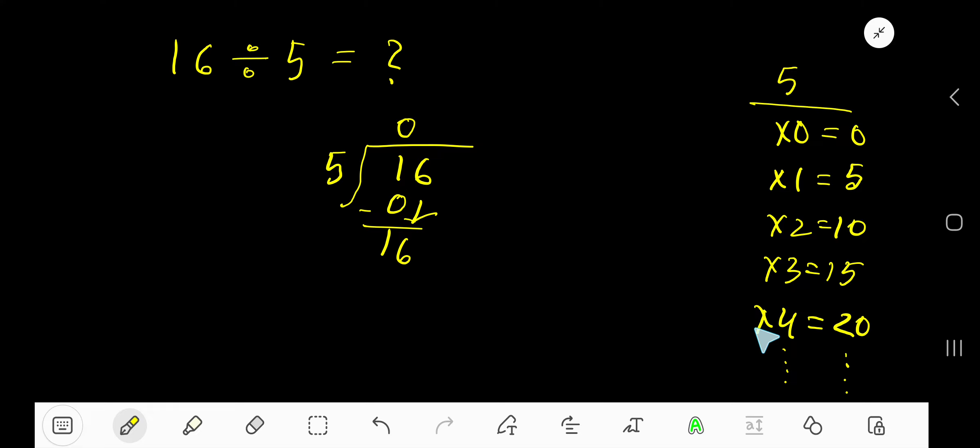3 times 15, 4 times 20. 4 times 20 is greater, so 3 times. Write 3. 3 times 5 is 15. Subtract, we are getting 1. This is our remainder, so our answer is 3 remainder 1.